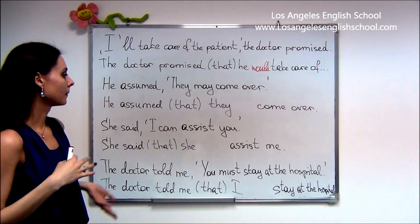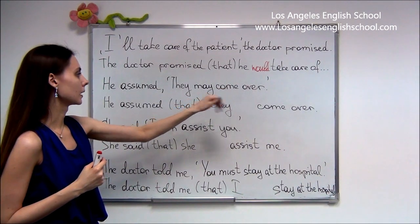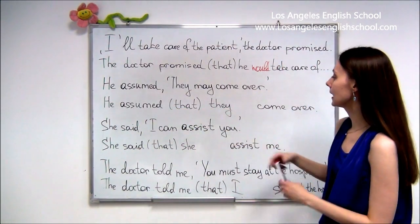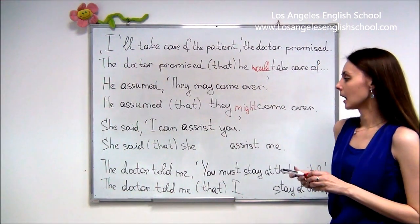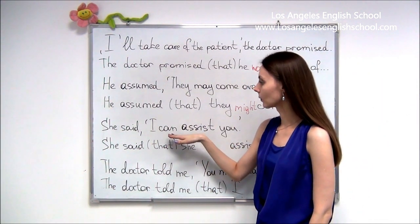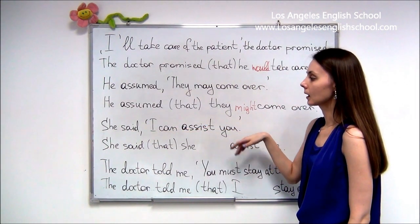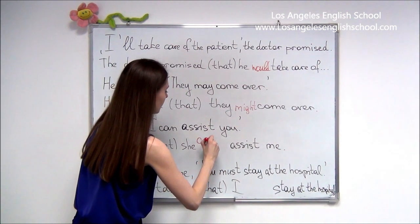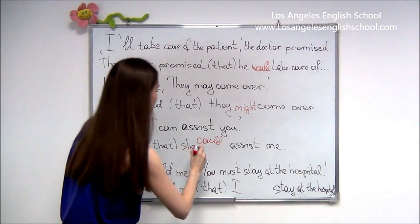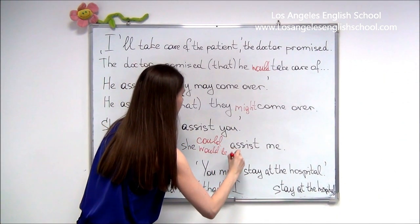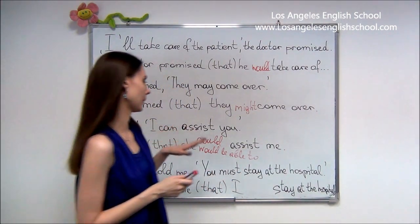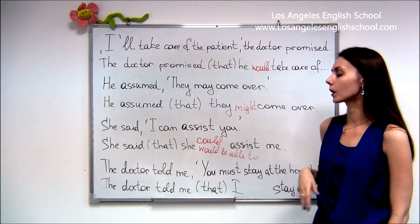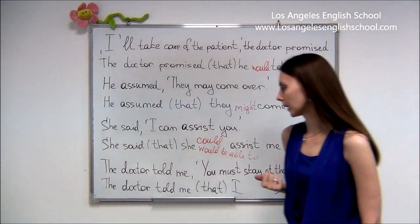Next we'll look at some modal verbs. 'He assumed they may come over.' For out-of-date reporting, 'may' changes into 'might': he assumed that they might come over. For 'can' — for example, 'She said I can assist you' — you have two choices: she said that she could assist me, or she said that she would be able to assist me.